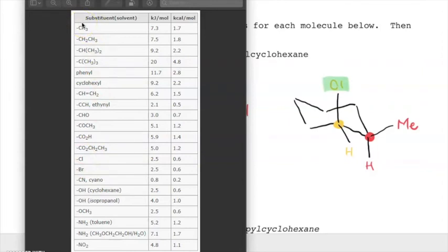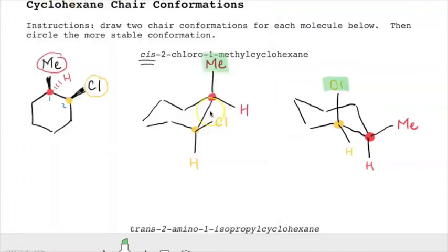It is easier to put a chlorine in the axial position than a methyl group. This makes sense because a single chlorine atom is pretty small, and a methyl group consists of a carbon and three hydrogens, so it's likely to have a slightly bigger electron cloud, making it more susceptible to diaxial interactions. We would expect this to be more stable because it's easier to put chlorine in the axial position than methyl.